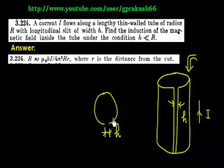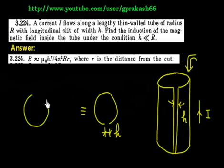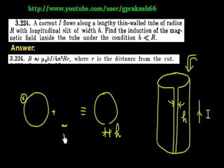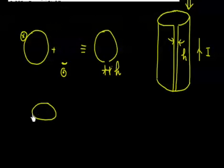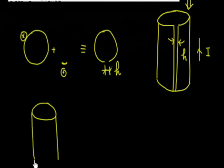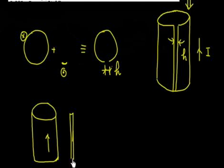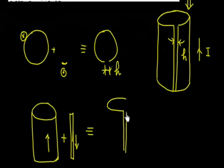We will use the idea of superposition. This system is equivalent to: if I have a current in the full cylinder, and then I have a negative current (or current in the opposite direction) in the slit region. So you have a current inward in one case, and current outward in the slit. This system is equivalent to a full cylinder with current plus a wire that carries a current in the downward direction.